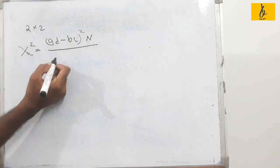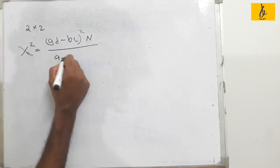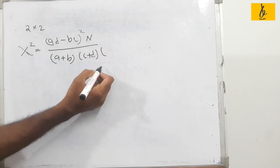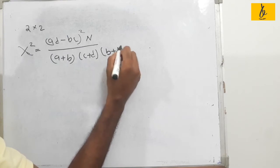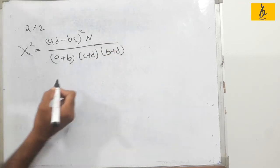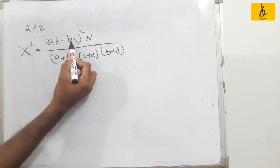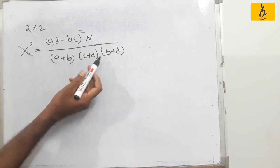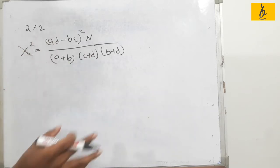The chi-square formula involves: A plus B, into C plus D, into A plus C, into B plus D. This is the chi-square formula. The variables in this formula are A, B, C, D, and N.